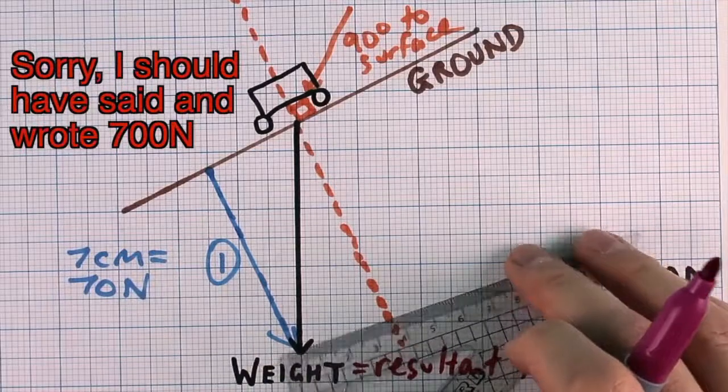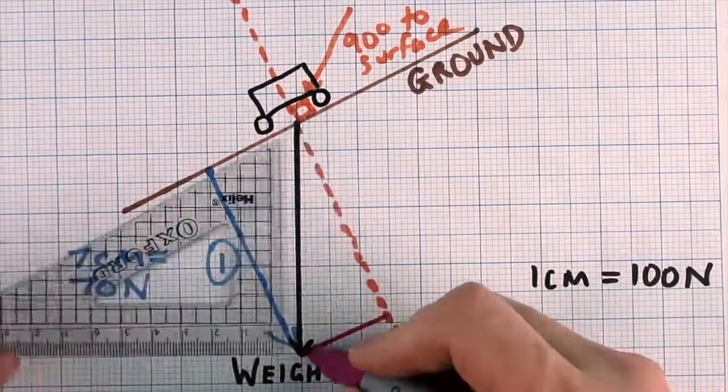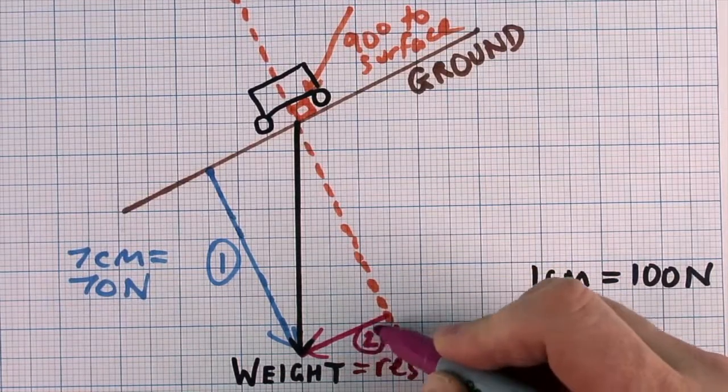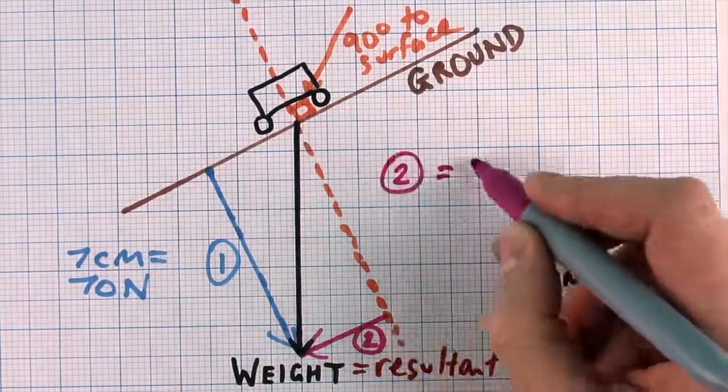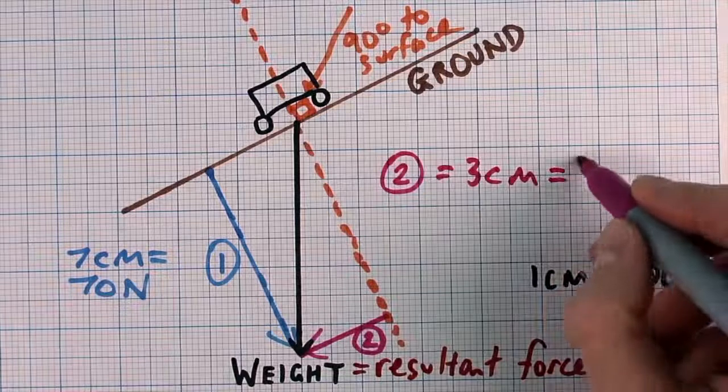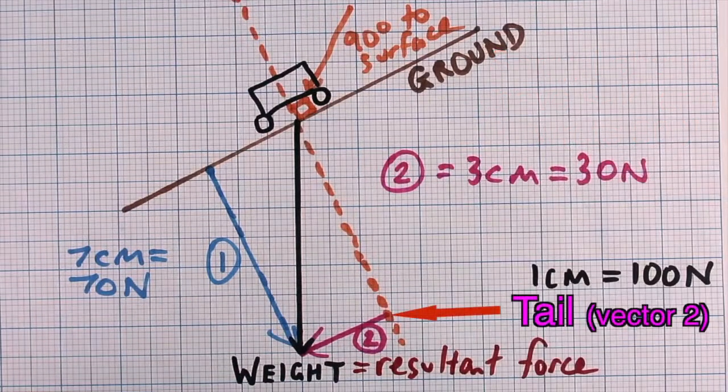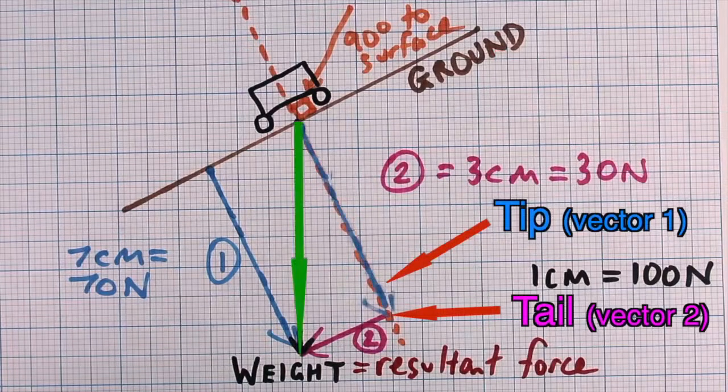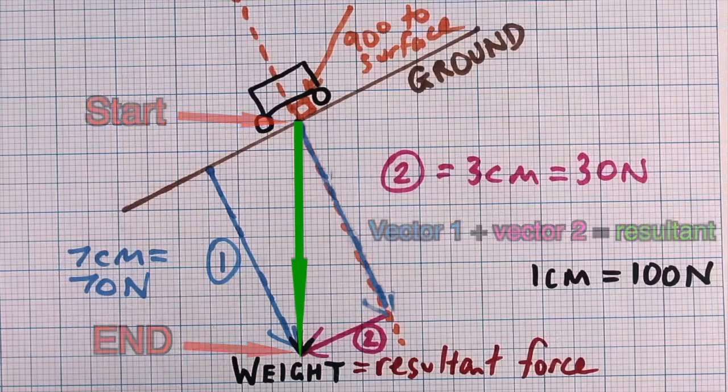Next, draw a line parallel to the ground surface, that starts at the dashed line, and stops at the tip of the weight arrow. Call this vector 2. Vector 2 is 3 centimeters. So on our scale of 1 centimeter equals 100 newtons, that is 30 newtons. If we were to add the tail of vector 2 to the tip of vector 1, then that would equal the resultant, because the components start and end at the same place as the resultant.